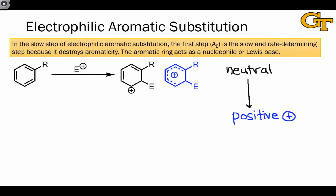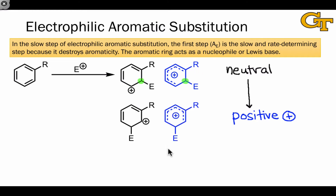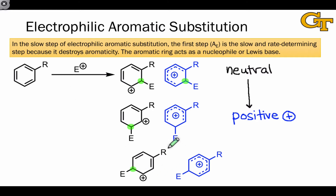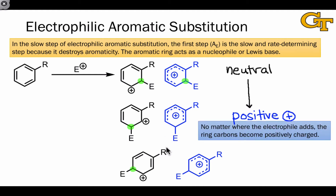For example, I've shown here the electrophile adding at the ortho position with respect to the substituent R. But there are other possible products where the electrophile adds at the meta and para positions. We'll deal with the question of site selectivity in the next video, but the point I want to make is that no matter where the electrophile adds, the ring carbons become positively charged in the sigma-complex intermediate.